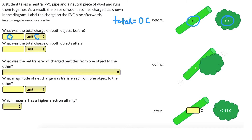The objects get rubbed together and charged particles transfer between the objects, and we end up with these charges at the end. Based on the conservation of charge, which tells us the total charge at the beginning equals the total charge at the end, we know our charge before and after will be the same. Since we had 0 coulombs at the beginning, we must also have 0 coulombs at the end.